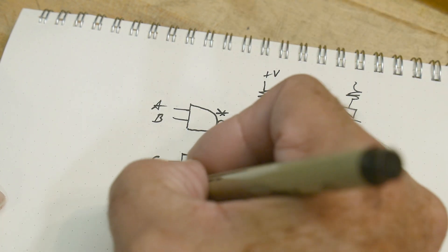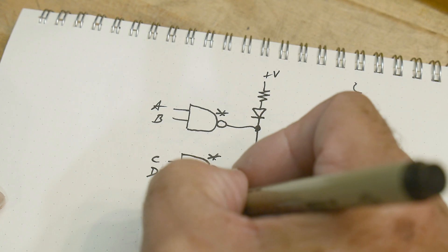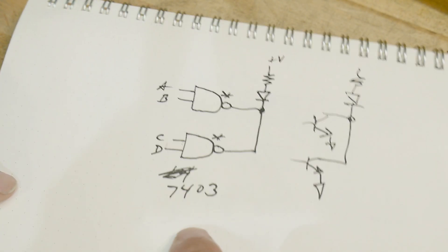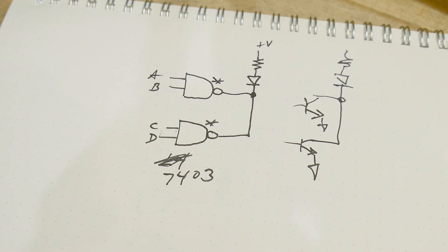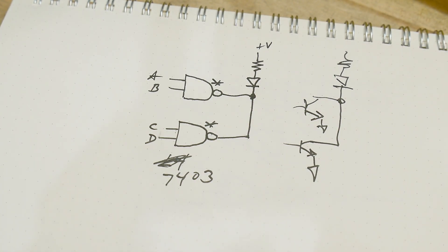So this is a 7403. The 03 was an open collector version of the 00, 7400. So yeah, we can all do it with that one simple circuit. So let's take a look at that.